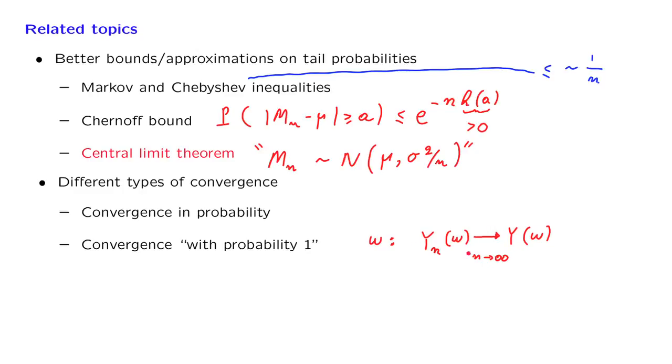Now, for some outcomes omega, this will happen. For some, it will not happen. We will say that we have convergence with probability 1 if this event has probability equal to 1.